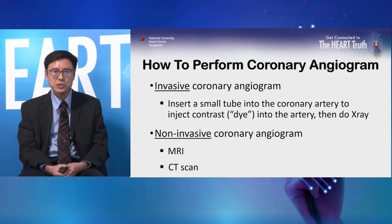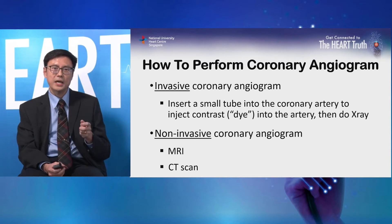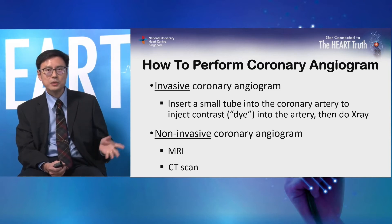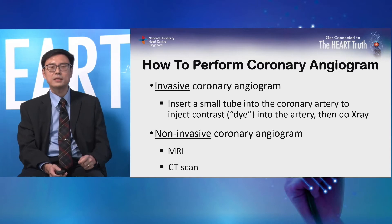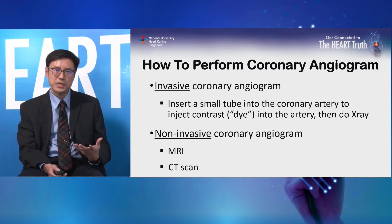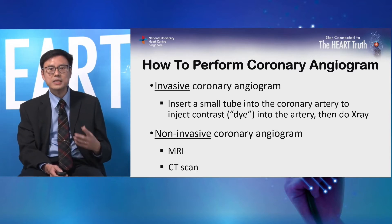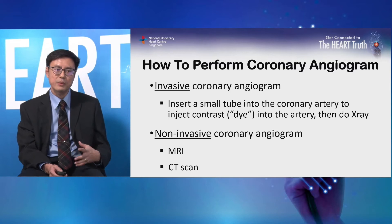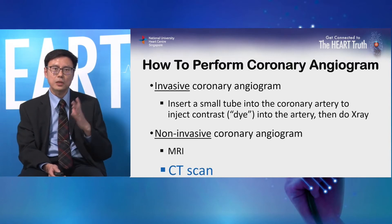There are two general ways to perform a coronary angiogram. One way is to insert a tube into the coronary arteries, inject a dye — also called contrast medium — and then do x-rays to show the arteries and any blockage or narrowing. That is an invasive procedure and carries a small risk of complications such as bleeding. Another way is a non-invasive coronary angiogram using MRI scanners or a CT scanner.